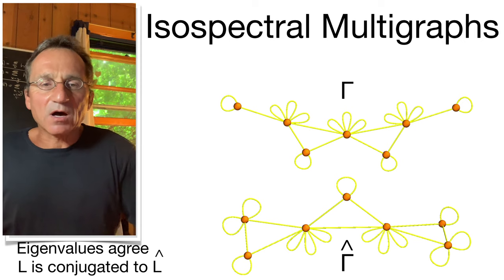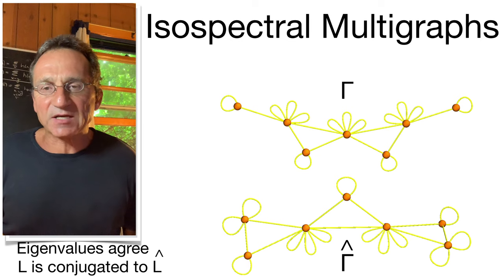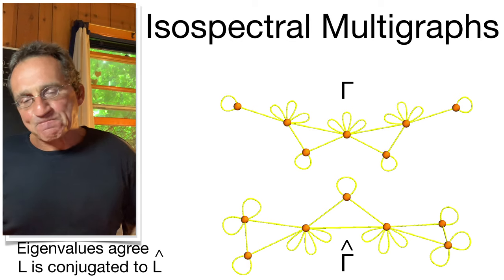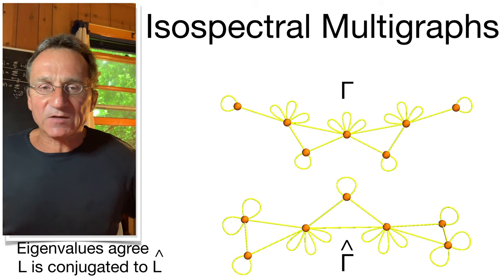So here are the two graphs. The adjacency matrices are both bilinear forms, the same eigenvalues, and one is even conjugated to the inverse of the other.